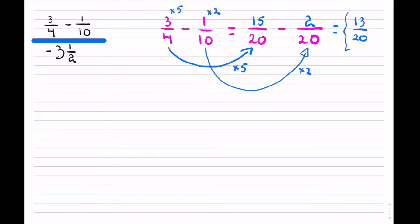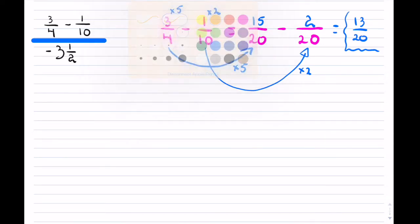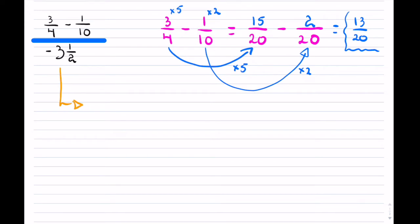I cannot reduce this fraction any further, so that is my numerator. Now my denominator, on the other hand, I don't have much to do — I have just a mixed number that is negative there. So I will change it to an improper fraction. 2 times 3 is 6, plus the 1, so that becomes 7 over 2.